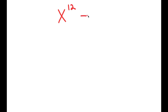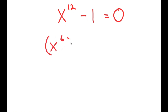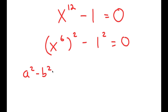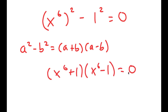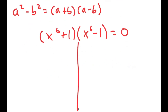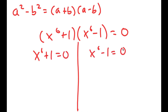In this video, I'm going to solve the equation x to the power of 12 minus 1 is equal to zero. To solve this, I'm going to first rewrite this as x to the power of 6, squared, minus 1 squared is equal to zero, so I can use the property a squared minus b squared equals a plus b times a minus b. This turns into x to the power of 6 plus 1 times x to the power of 6 minus 1 equals zero, giving me two equations: x to the power of 6 plus 1 equals zero, and x to the power of 6 minus 1 equals zero.